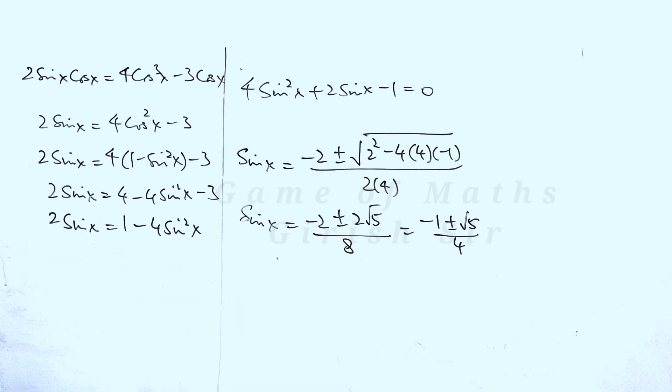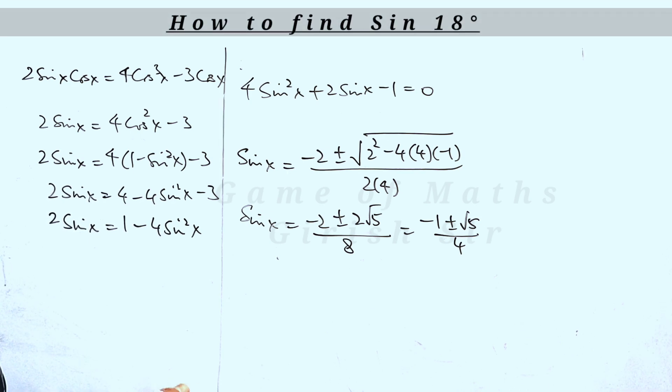Now here we are getting 2 possible values. One is positive, second is negative. We have to reject the negative root because sin 18 degrees must be positive, as 18 degrees is an angle in the first quadrant where sin theta is positive.